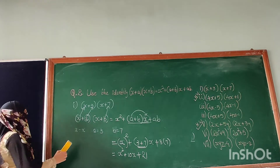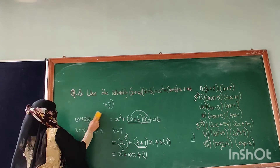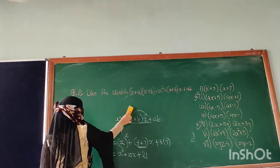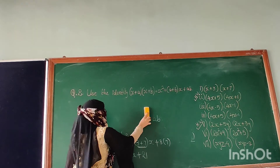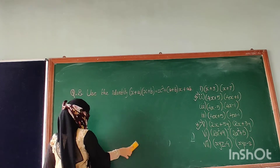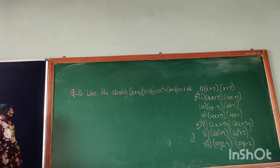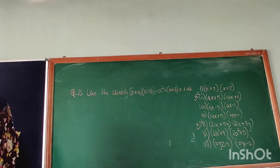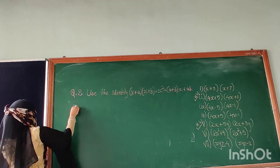Understand — it's very easy. Simply you have to find the values of x, a, and b, and you have to put them in the given identity. So the second sum, you will try to simplify it yourself, and we will begin with the third sum.